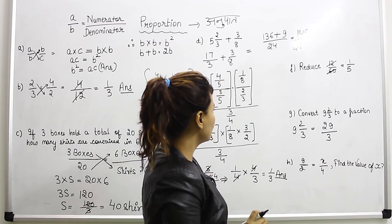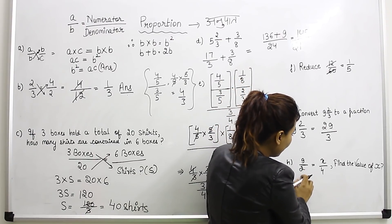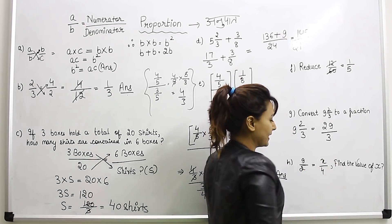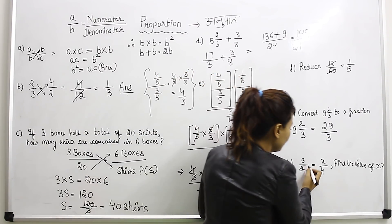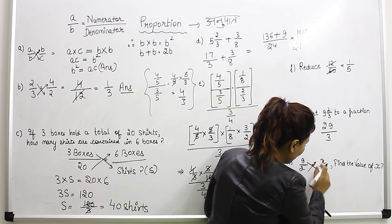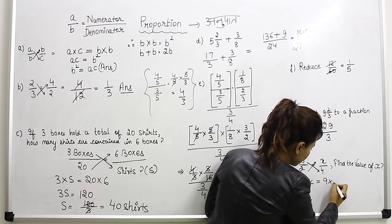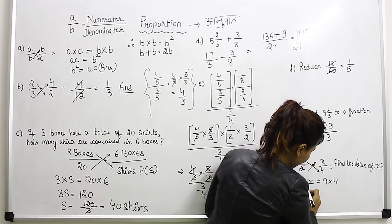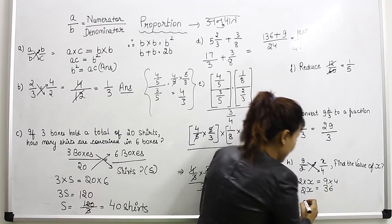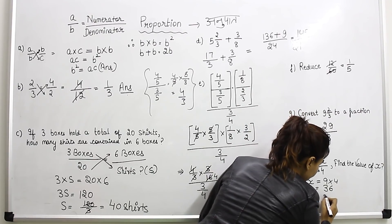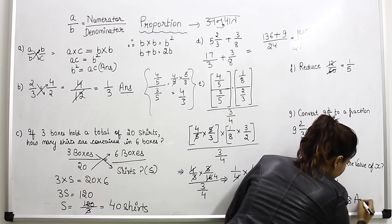Question number 7: here 9 by 2 is equal to x by 4. Find the value of x. We cross multiply: 2 times x equals 9 times 4. So 2x equals 36. Therefore x equals 36 divided by 2, which equals 18. This chapter is very important.